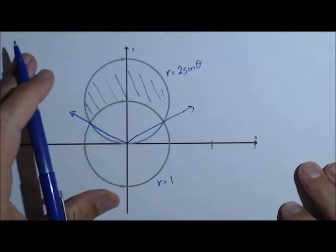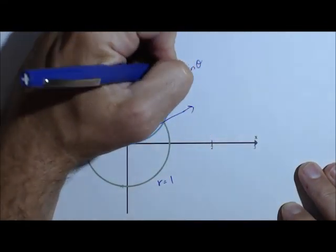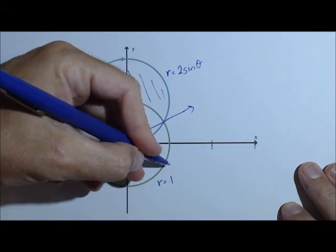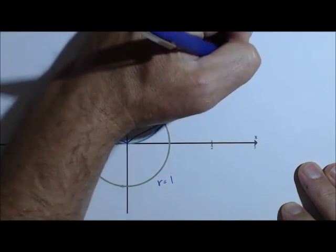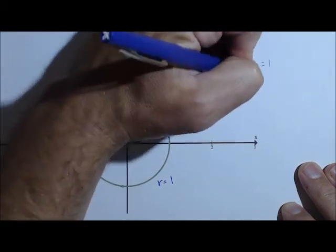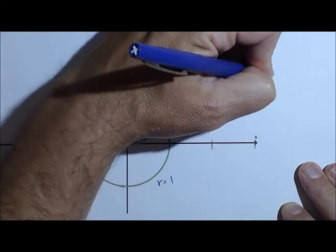So to get those angles, well, it's where these two intersect, so it's where 2 sine theta equals 1. So 2 sine theta equals 1 gives us sine theta equals 1 half.